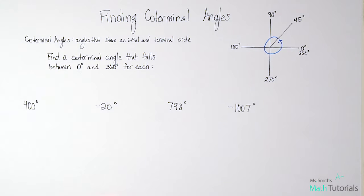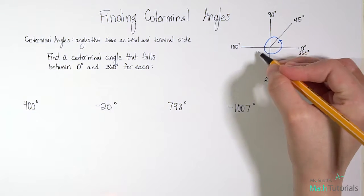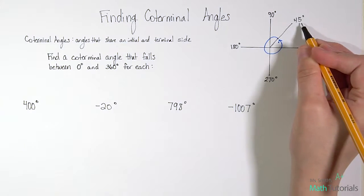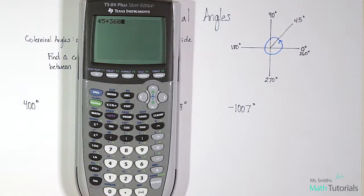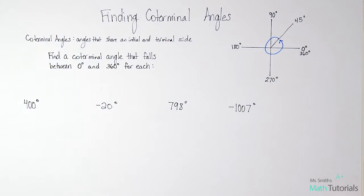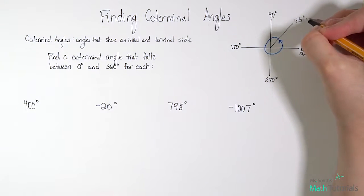So to find what that new angle is in this new spot, we would take the original angle of 45 and we would just add 360 to it. And that would give us 405. A coterminal angle to 45 degrees would be 405 degrees.